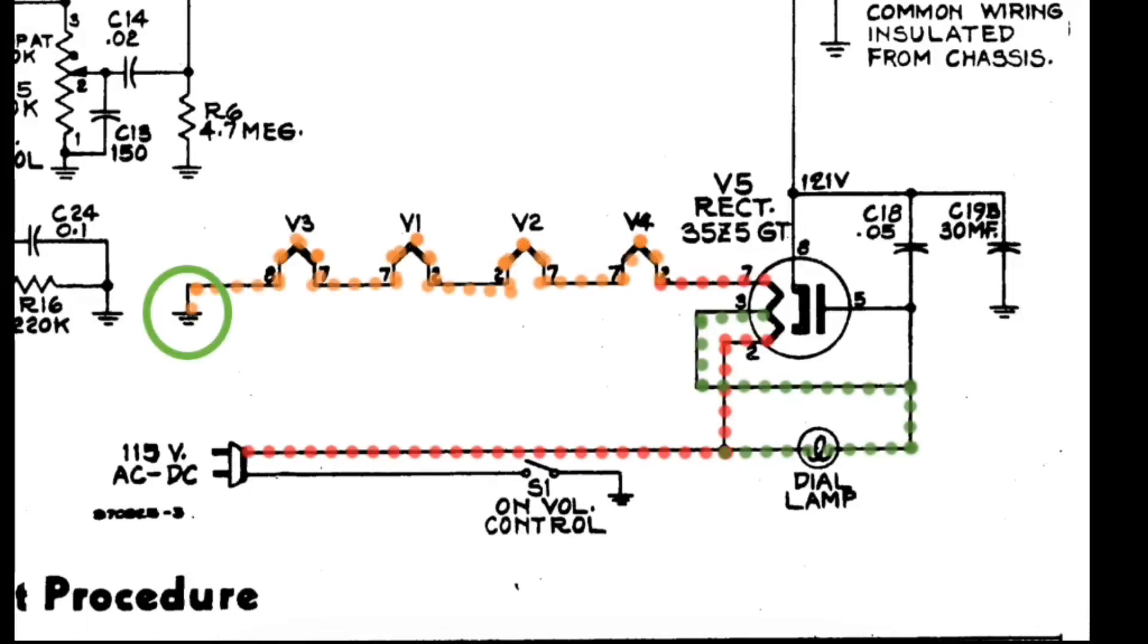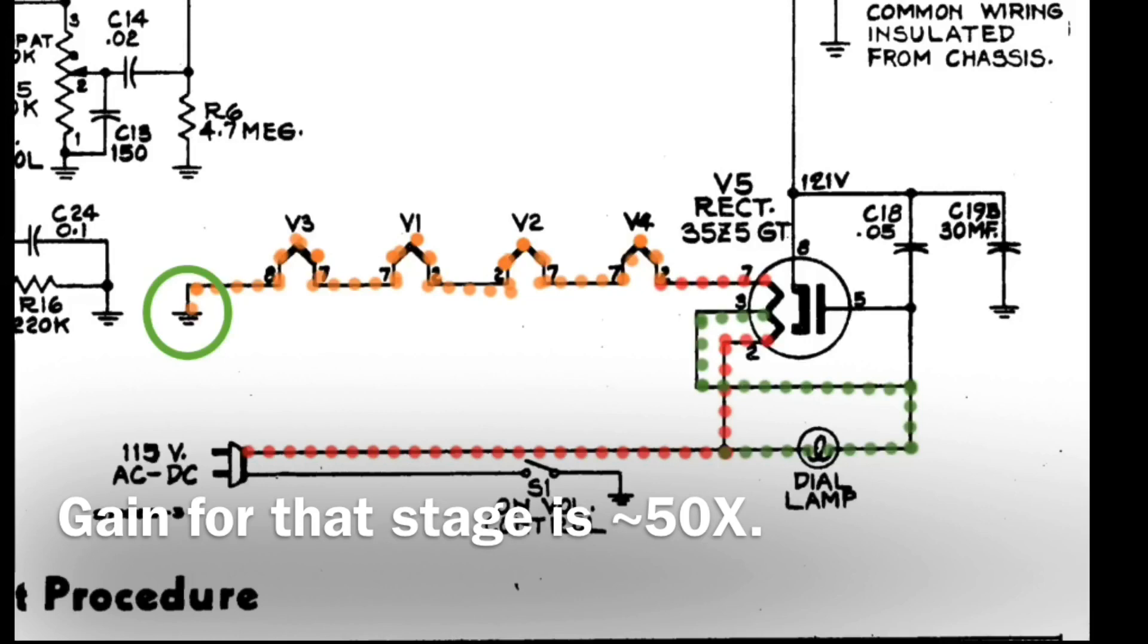One thing you'll notice too, which is most common, is the routing here of the filament voltage. You can see when we leave the rectifier here, after we pass through the rectifier tube, the normal wiring would be to go to the audio output tube next, which is V4, then to the IF amplifier V2, then the oscillator mixer V1, and end up terminating here at the second detector AVC. The reason that was made last in series, in most cases, you can see that ties back to our B minus, and that helps mitigate hum due to the high gain of that first audio amplifier.